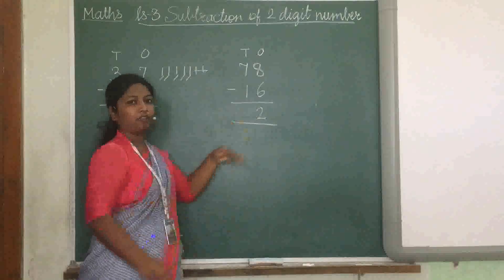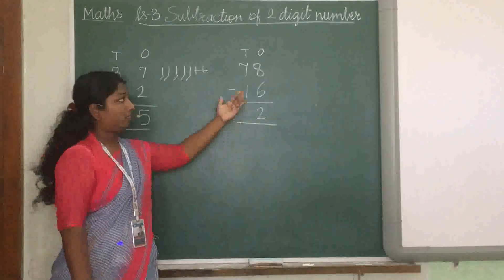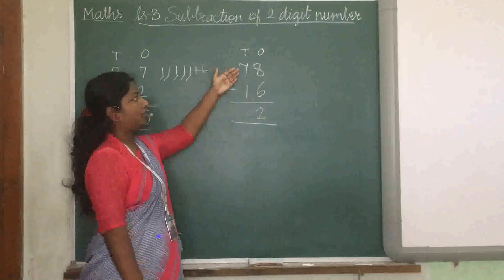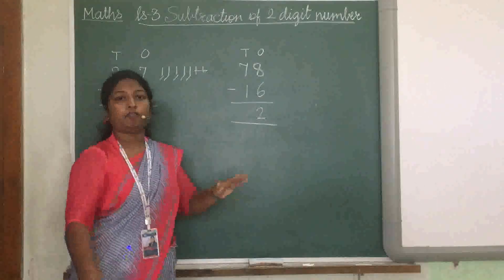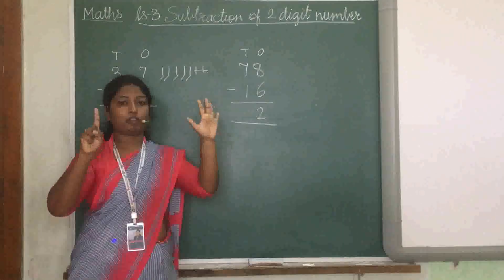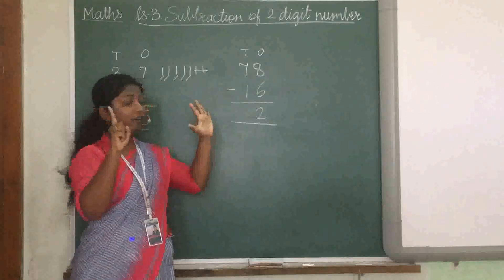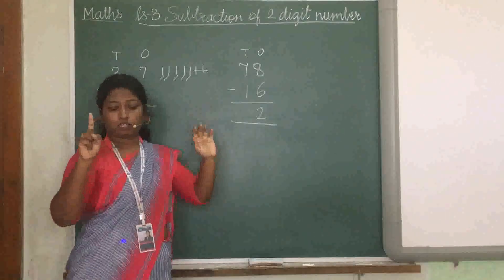This is the fastest method when we solve by this method. Okay. Then 7 minus 1. From 7, if we cut 1, how many will remain? The answer is 6.